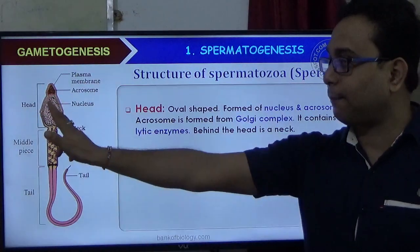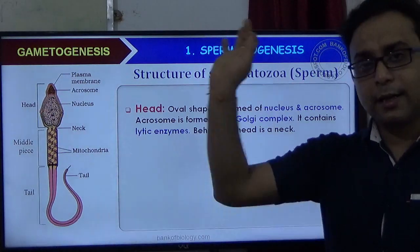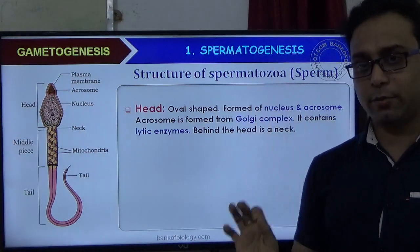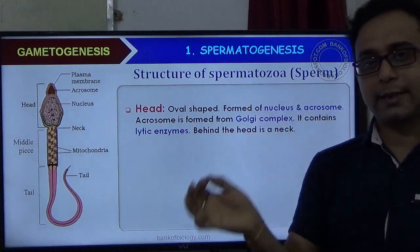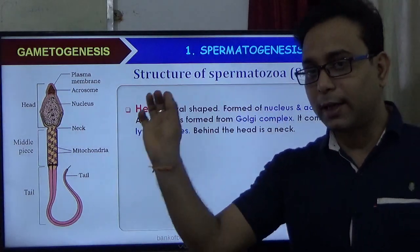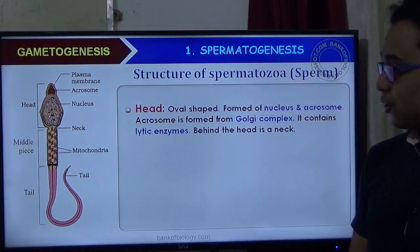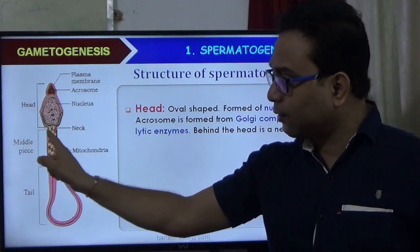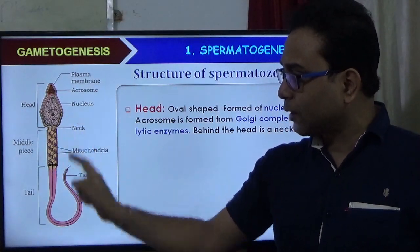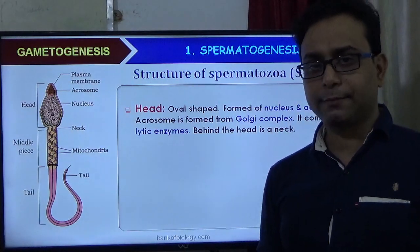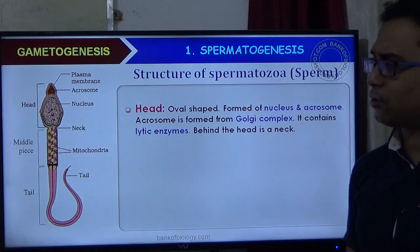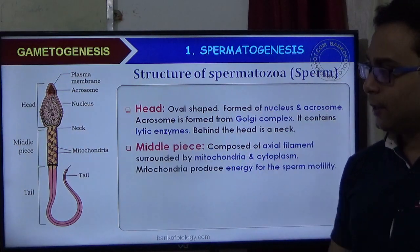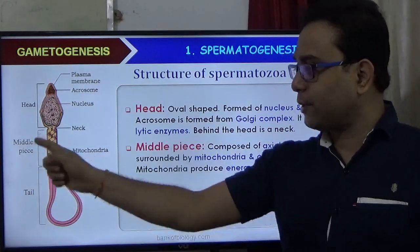The nucleus contains a haploid number of chromosomes. In human beings, this number is 23 — either 22 plus X or 22 plus Y. Behind the head is a small zone called the neck part.